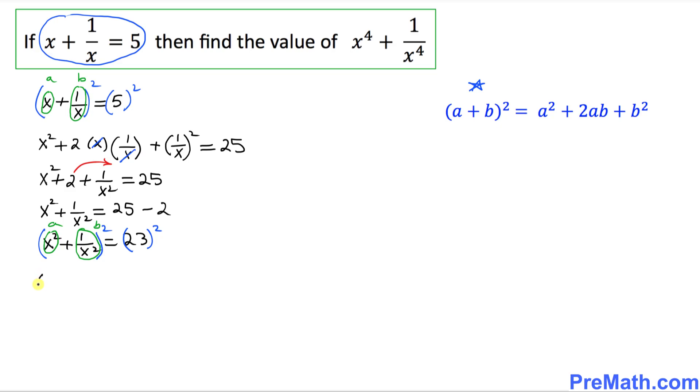Once we expand this thing, that's going to give us x squared and then squared, plus 2 times x squared times 1 over x squared, plus 1 over x squared and then the whole square, equals the square of 23, which is 529.